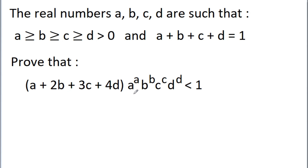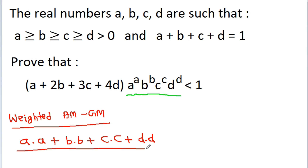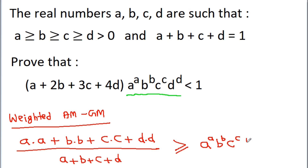How can we proceed? Seeing A^A · B^B · C^C · D^D gives us the idea of AM-GM. Instead of using regular AM-GM, if we use weighted AM-GM, giving number A a weight of A, number B a weight of B, number C a weight of C, and number D a weight of D, with sum of weights A+B+C+D, we get (weighted average) ≥ A^A · B^B · C^C · D^D to the power 1/(A+B+C+D).